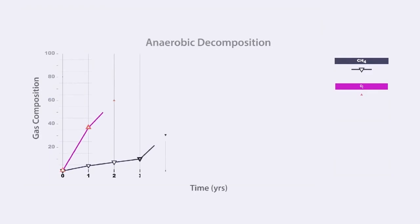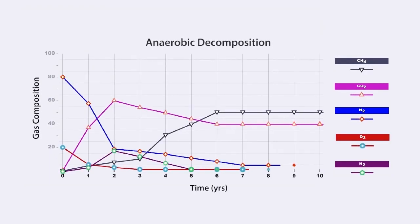Phase 3 of the decomposition process is characterized by lower temperatures, high carbon dioxide concentrations of 40% to 48%, and significantly higher methane concentrations of 45% to 57%. Anaerobic decomposition will continue until all of the volatile organic acids are depleted, or until oxygen is reintroduced into the waste. The graph shows LFG composition trends versus time for the aerobic and anaerobic decomposition of landfill refuse.